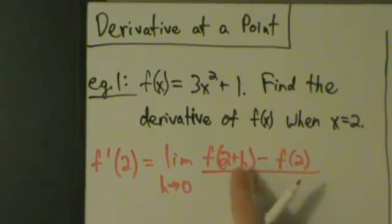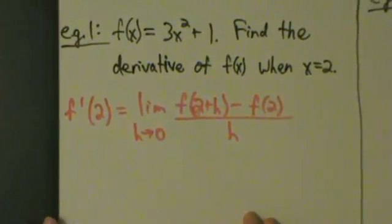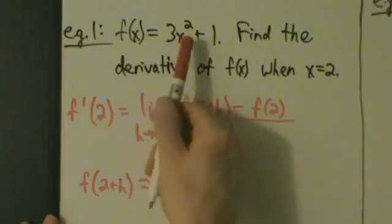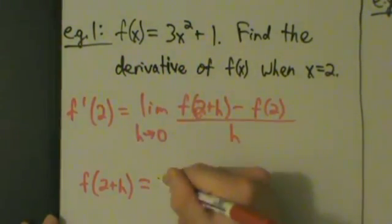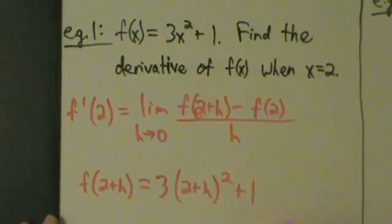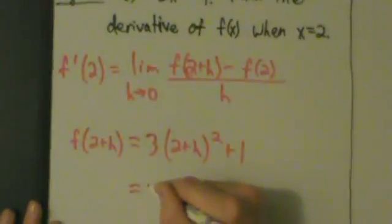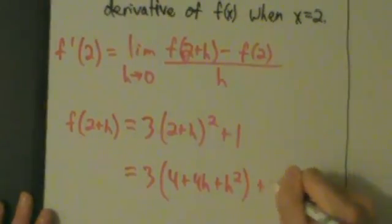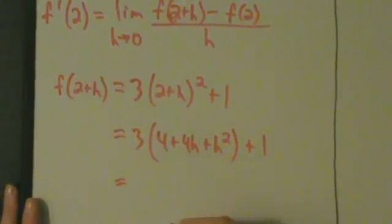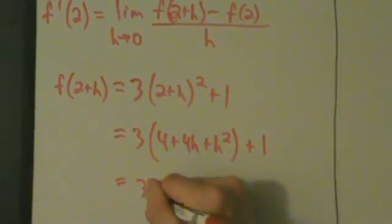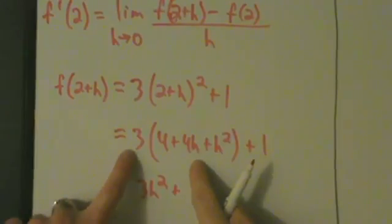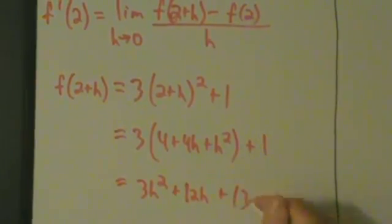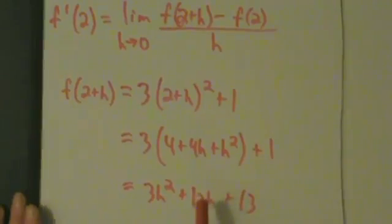Now we just have to figure out what f of 2 plus h and f of 2 are. f of 2 plus h: since f of x is 3x squared plus 1, f of 2 plus h is 3 times (2 plus h) squared plus 1. Foiling that out gives 3 times (4 plus 4h plus h squared) plus 1. Distributing the 3: 3h squared plus 12h plus 12, and then plus 1 gives us 13. So f of 2 plus h is 3h squared plus 12h plus 13.